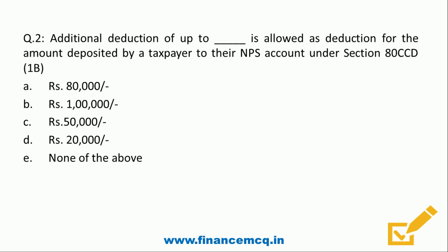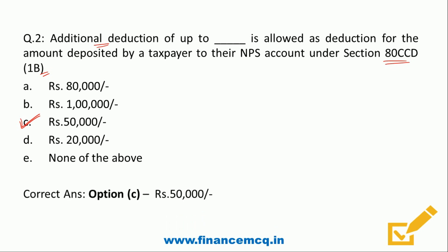Here we are talking about additional deduction, not the original deduction. ₹50,000 is allowed as additional deduction under this section — it is the maximum allowed deduction under Section 80CCD(1B). Now let's move on to the next question.